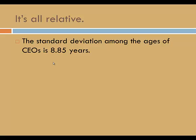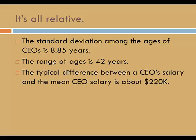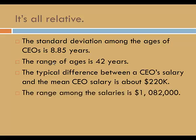Standard deviation is a common measure of spread. Among the CEO ages, the standard deviation is 8.85 years. Does that indicate a lot of variety among the CEOs? It's all relative. Keep in mind that the range of ages is 42 years. The range, together with the standard deviation, seem to indicate that there is a good bit of variety among the CEOs according to age. The standard deviation among the salaries — the typical difference between a CEO's salary and the mean — is about $220,000. When you keep in mind that the range of salaries is over $1,000,000, the two together indicate that there is a lot of variety among the salaries. The dispersion is great.